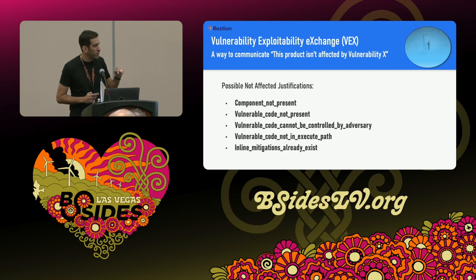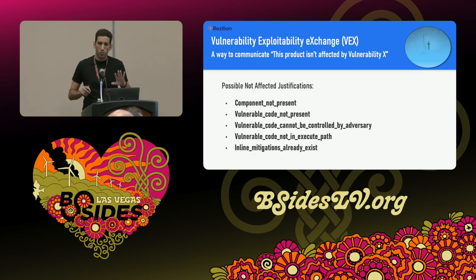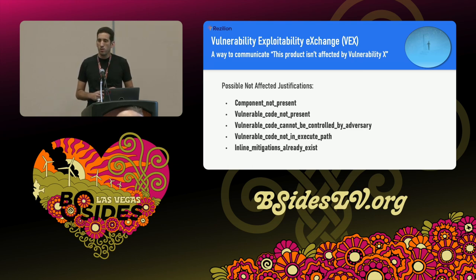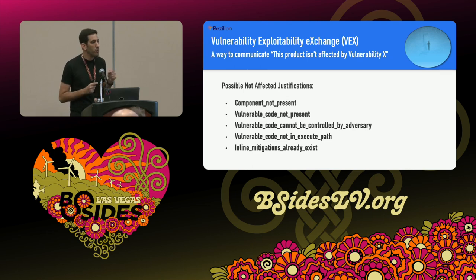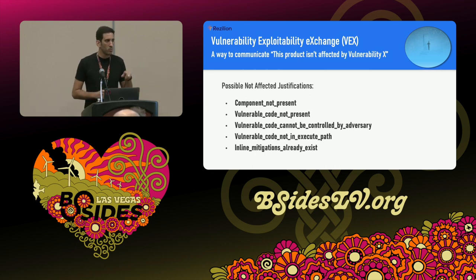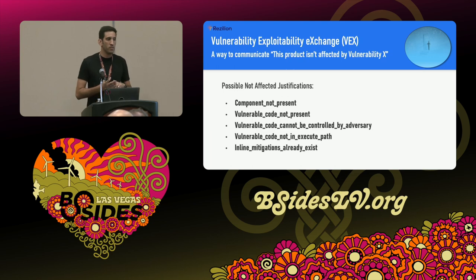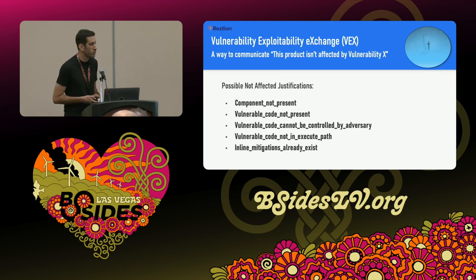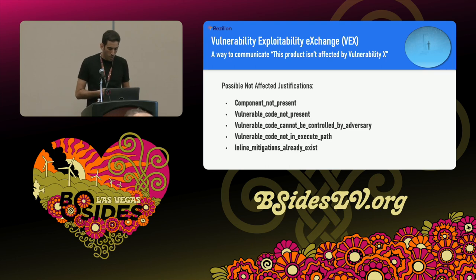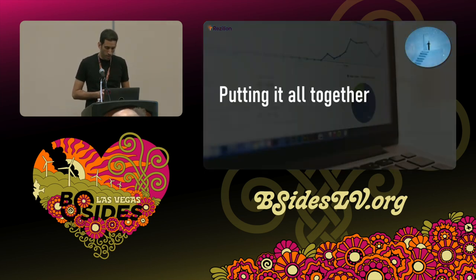There are several justifications for VEX statuses. For example, 'vulnerable code not present': with Log4Shell, one remediation was to remove the vulnerable JNDI lookup class from the JAR file. If you remove that class, you still have the vulnerable JAR at the vulnerable version — your scanner would say you're affected, but you're not. With a VEX document, you can update that status to inform your security tooling and your suppliers that you're not actually affected by that specific vulnerability.